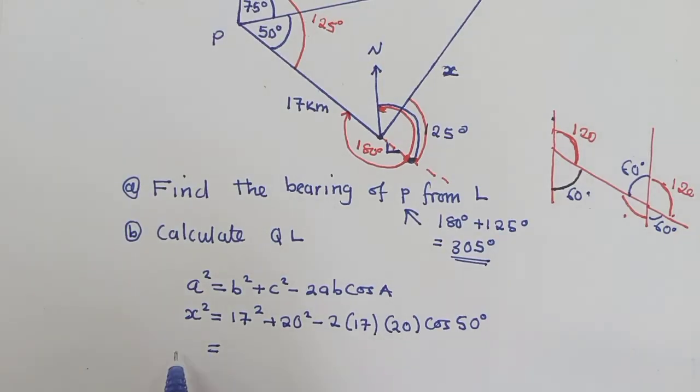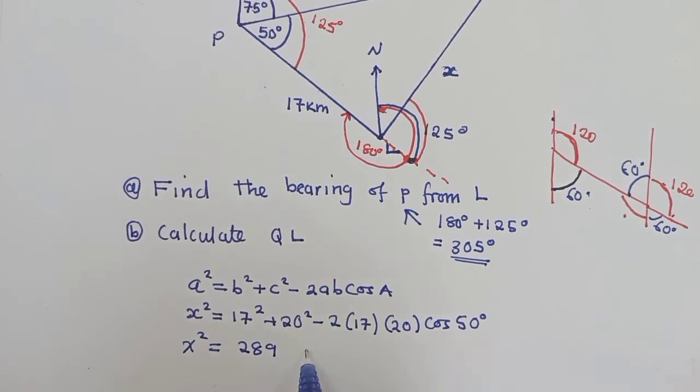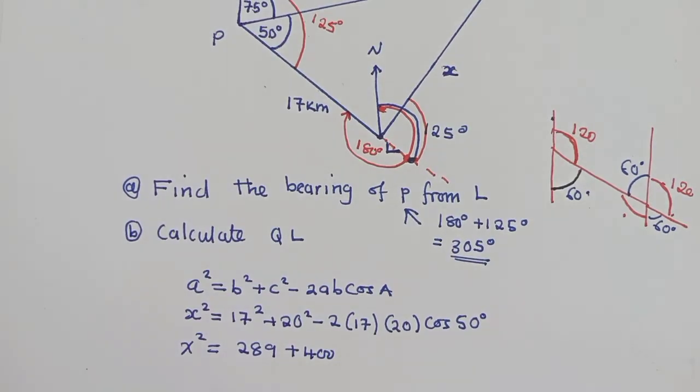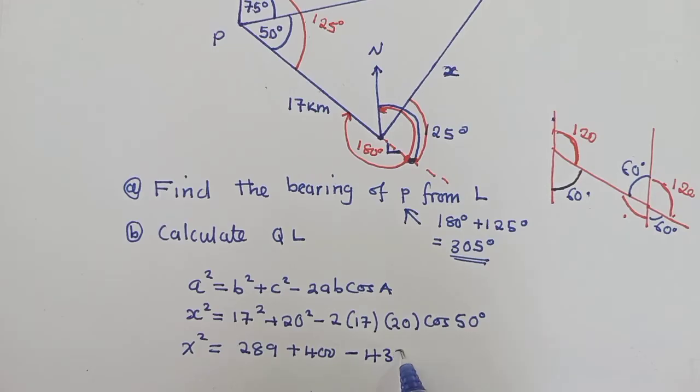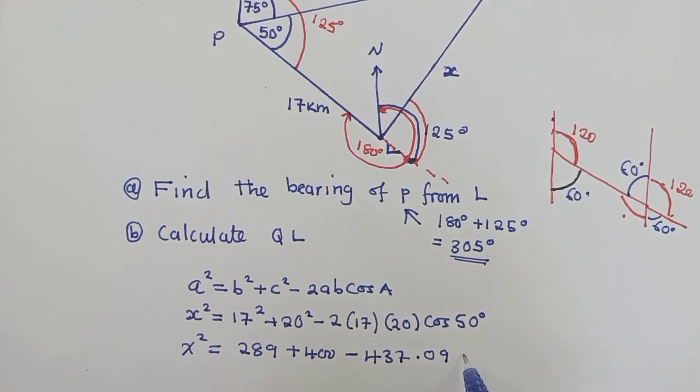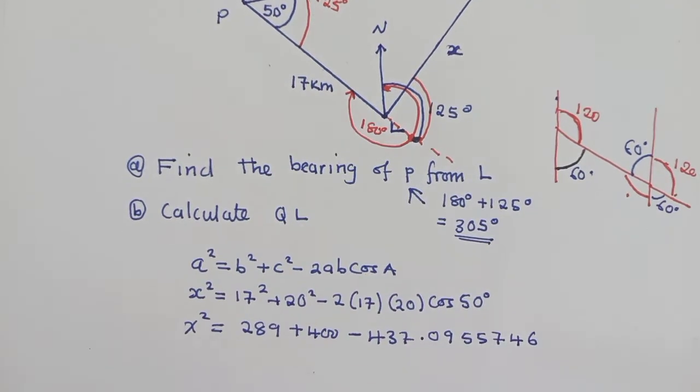What are we getting? So if we say 17 squared, what is it that we are getting? We are getting 289 plus 400 here, because 20 squared is 400 minus, so if we say 2 times 17 times 20 times cos 50, what are we getting? We are getting 437.095574.6. This is what we are getting.